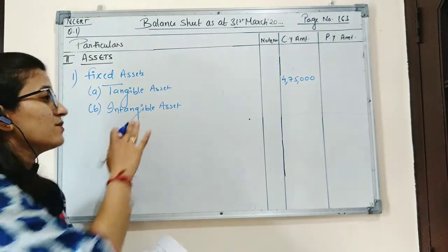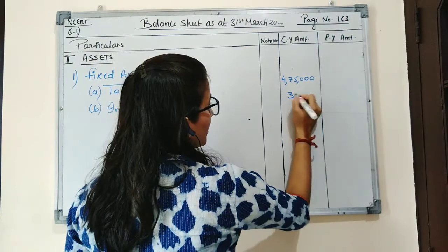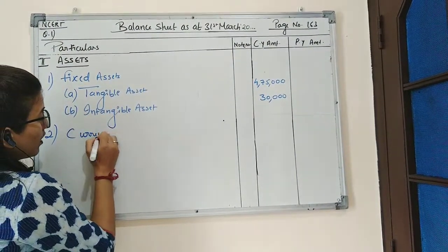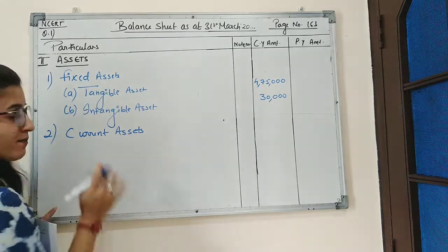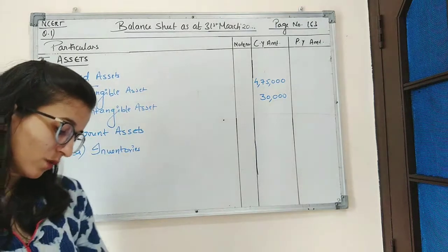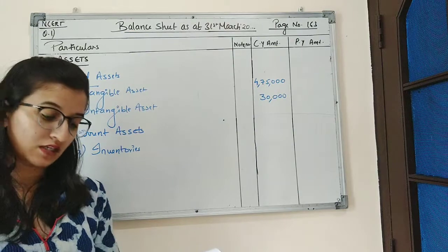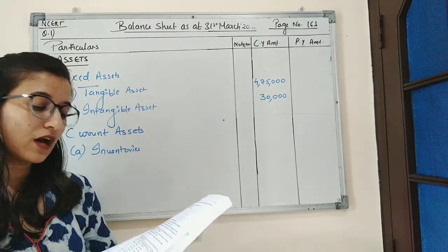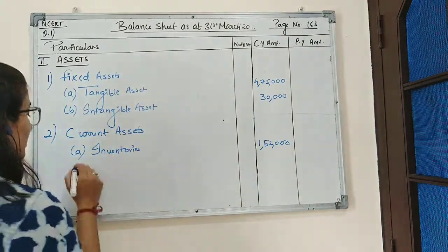For intangible assets, goodwill amounting to ₹30,000 is given in the question. Goodwill is considered an intangible asset, so we will record the amount of goodwill in the current year amount. The second part on the asset side is current assets. Under current assets there are six sub-parts. The first sub-part is inventories. Stock in trade amounts to ₹1,40,000, and loose tools amounting to ₹12,000 are also considered as inventory. So the total of inventories is ₹1,40,000 plus ₹12,000, which is ₹1,52,000.